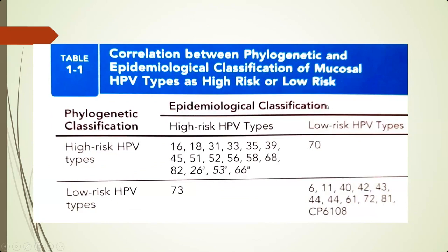A certain stretch within the L1 gene is used as a reference to differentiate types according to an international agreement on the classification of HPV virus types. Here is one table which shows correlation between phylogenetic and epidemiological classification of HPV types. We can see this high correlation between phylogenetic and epidemiological classification between high-risk and low-risk HPV types. But there are also some individual exceptions, such as low-risk type 75 which can be found in high-grade lesions, and low-risk type 70 which can be found in low-grade lesions.